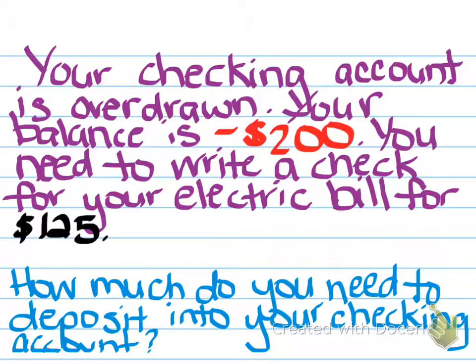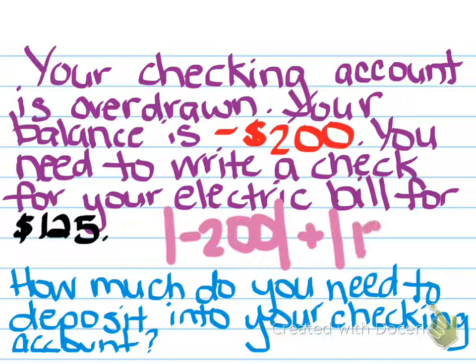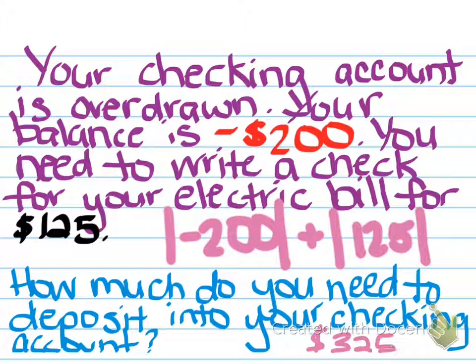It says you need to write a check for your electric bill for $125. How much do you need to deposit into your checking account? Your electric bill wants you to write a check and mail it in, so I need to deposit some money because I can't write a check if I have negative $200. How much do I need to deposit to cover the negative $200 along with the $125 for the electric bill? You take the absolute value of negative $200 and add the absolute value of $125, which gives you a total of $325 to deposit into your checking account.